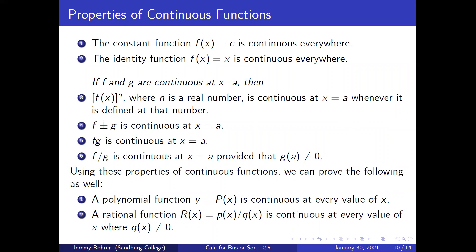Properties of continuous functions: the constant function f(x) = c is continuous everywhere; the identity function f(x) = x is continuous everywhere. If f and g are continuous at x = a, then f(x) to the nth power (where n is a real number) is continuous at x = a whenever it is defined there; f ± g is continuous at x = a; f times g is continuous at x = a; and f/g is continuous at x = a provided that g(a) does not equal 0. Using these properties, we can also prove that any polynomial function y = p(x) is continuous at every value of x, and a rational function r(x) = p(x)/q(x) is continuous at every value of x where q(x) does not equal 0.